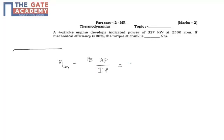So this is given as 80%, so that is 0.8. So the mechanical power which is obtained at the crank output is 0.8 into the indicative power which is 327.